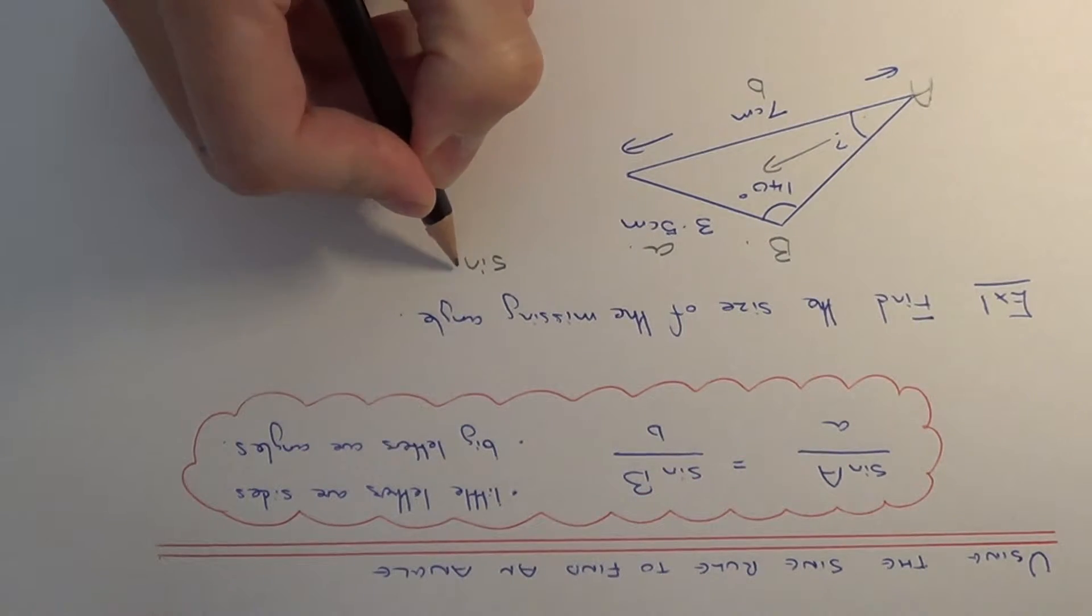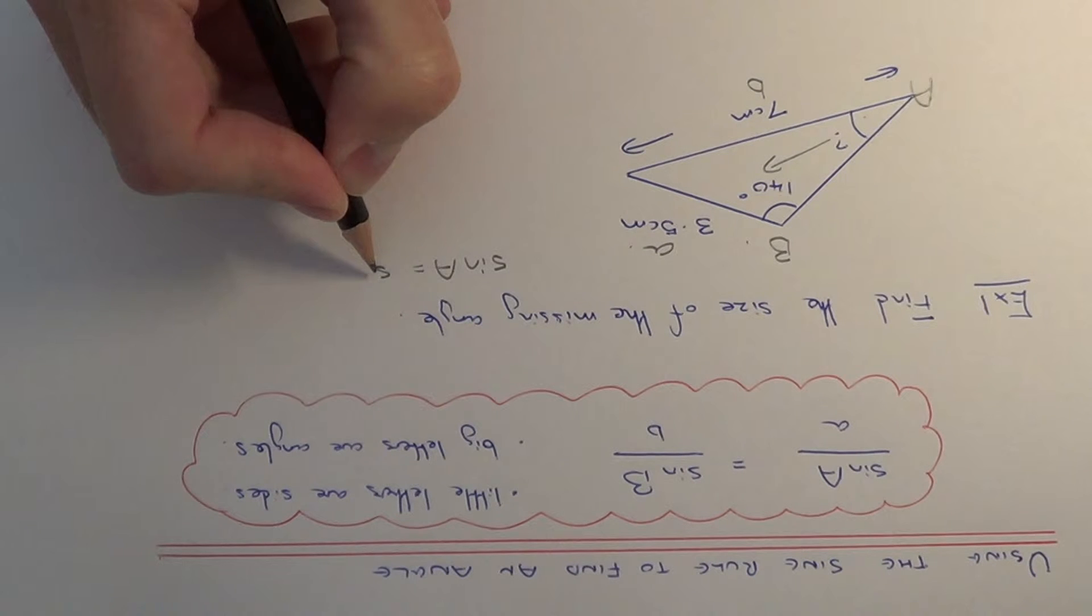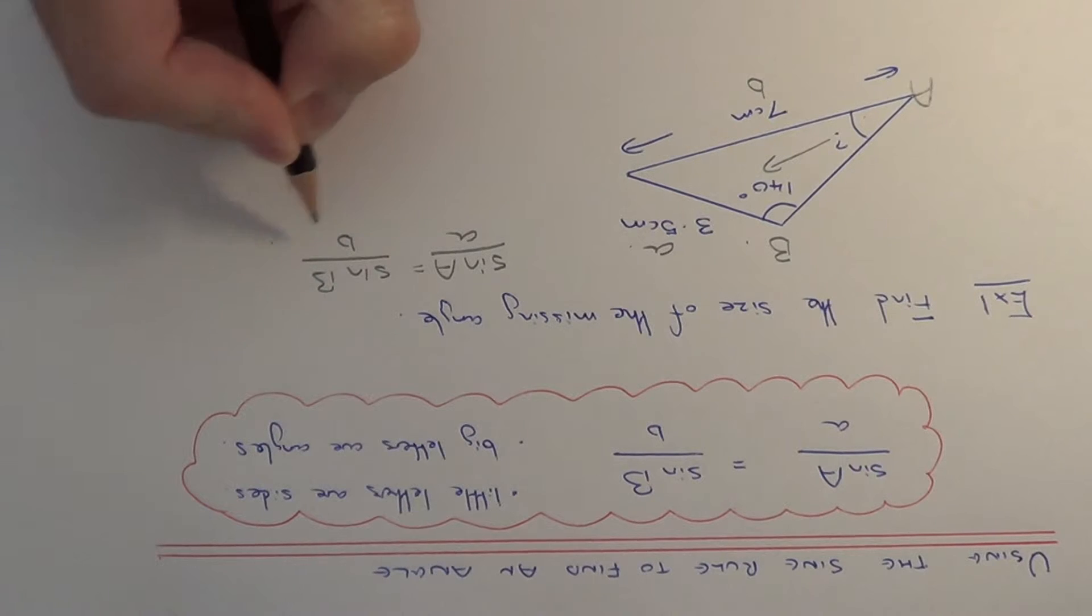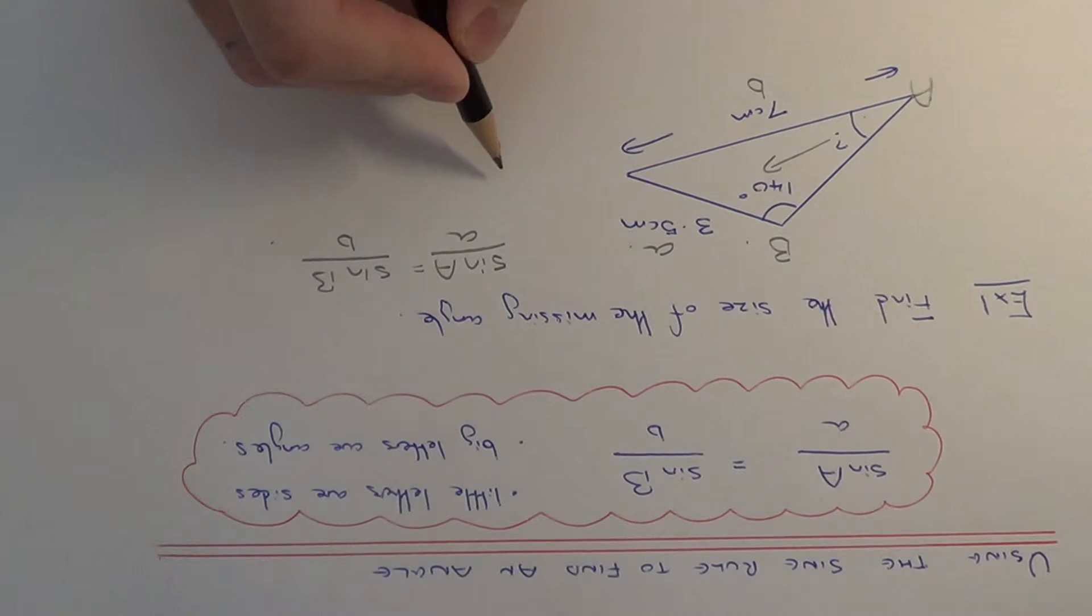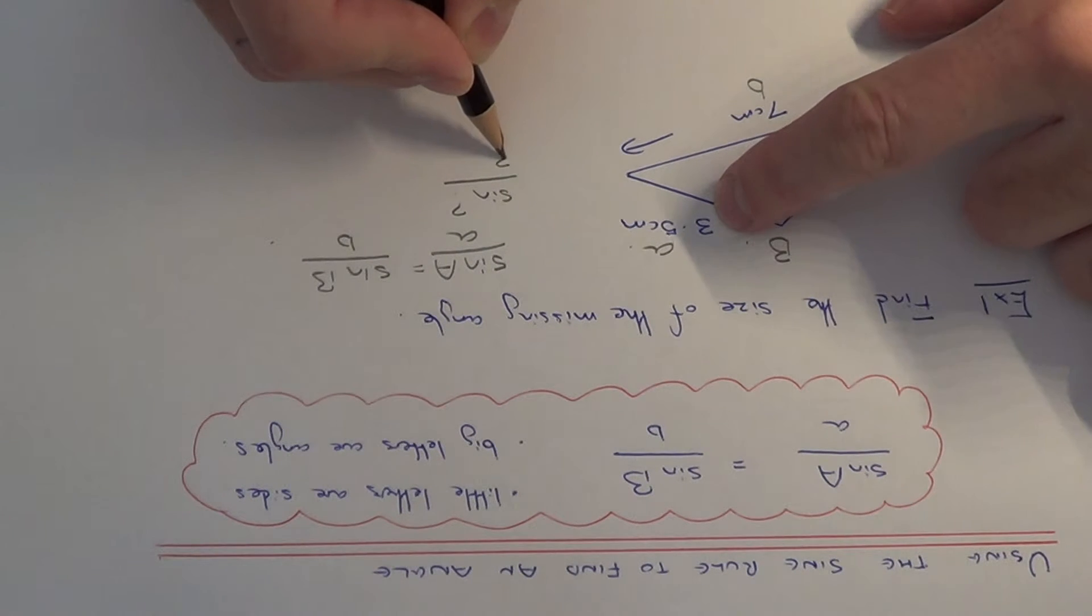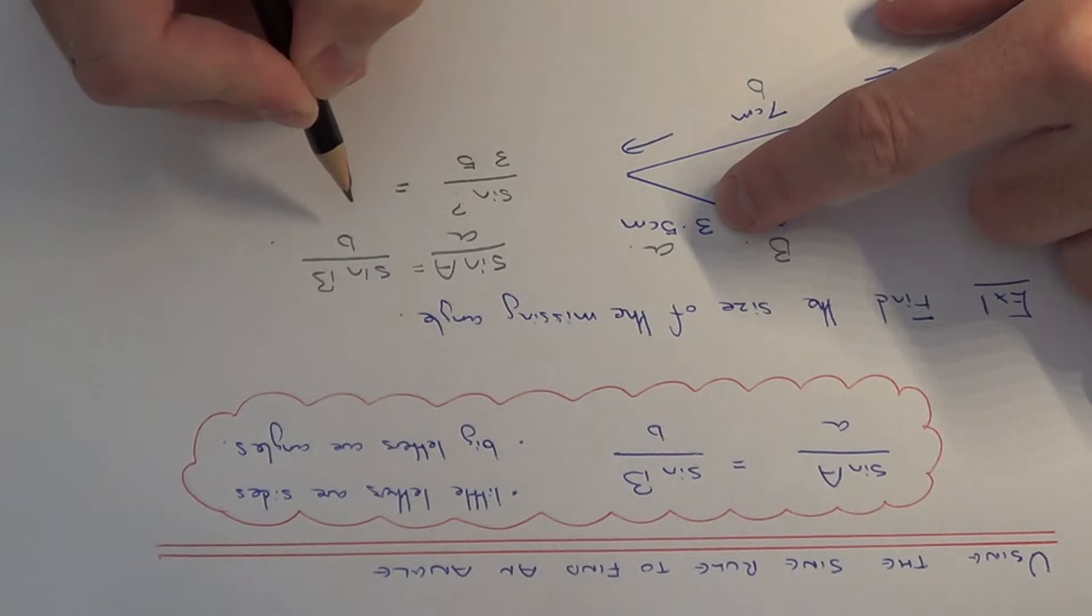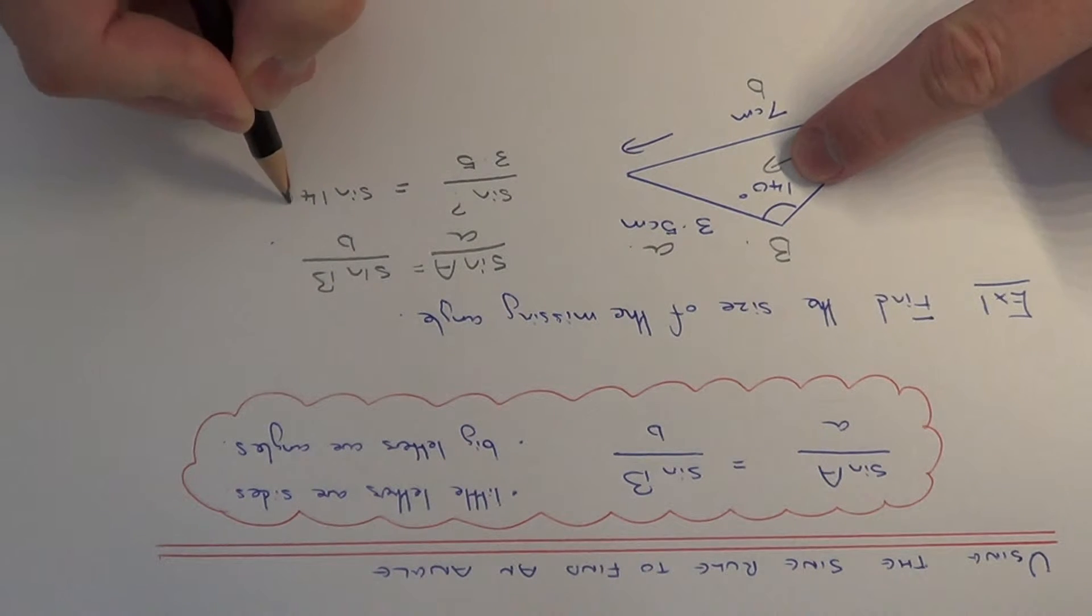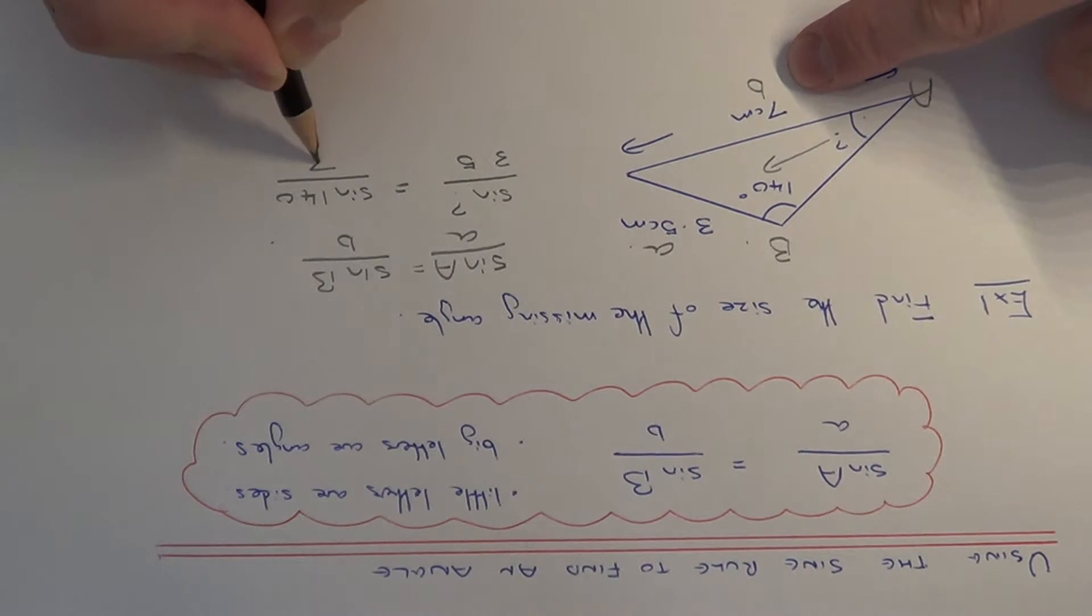It's sin capital A over little a equals sin capital B over little b. Substituting the numbers, it would be sin question mark over 3.5 equals sin 140 over 7.